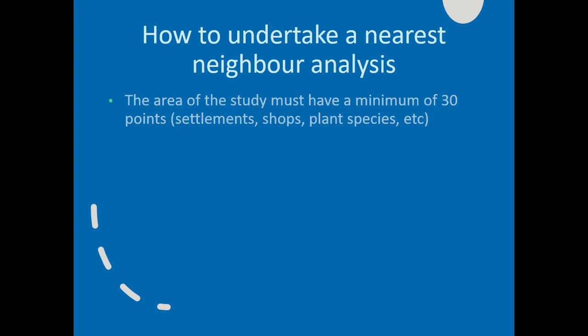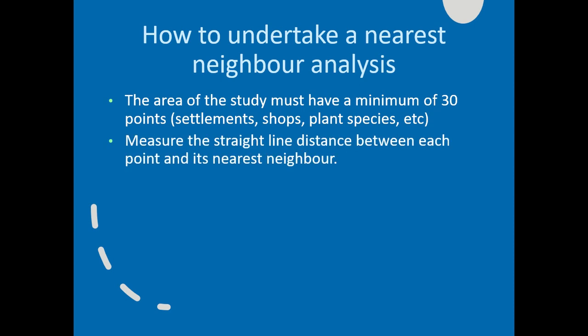OK, so how to undertake a nearest neighbour analysis? The area of study must have a minimum of 30 points. If you've not got 30 settlements, 30 shops, 30 plant species, 30 trees, 30 whatever it is you're counting, then you can't do the sum. You must have 30. You should measure the straight line distance, using a ruler, between each point and its nearest neighbour. So what this would look like is if you have a map which has, let's take a new example, farms on it, and farm is marked with the symbol FM, then you could draw a dot on all of the FMs on the map. It does not matter which farm you start with.